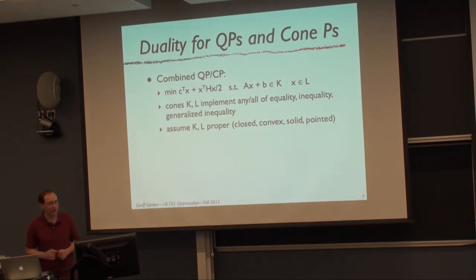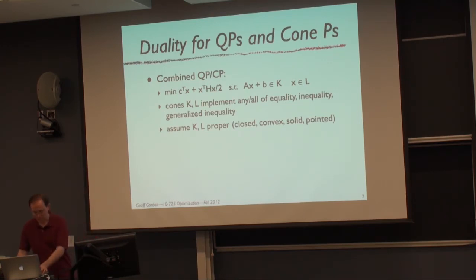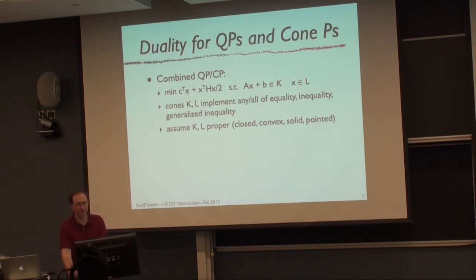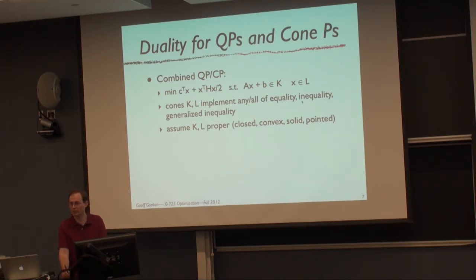Now, duality for quadratic programs and cone programs. I'm going to do both at once. The problem I'll take the dual of is: minimize C^T X plus X^T H X / 2, subject to AX + B in cone K, and X in cone L. Using different cones K and L, you can implement equality, inequality, generalized inequality, free variables, non-negative variables, and semi-definite constraints. We assume K and L are proper cones — closed, convex, solid (has interior), and pointed (contains no full line) — so that dual cones are also proper.